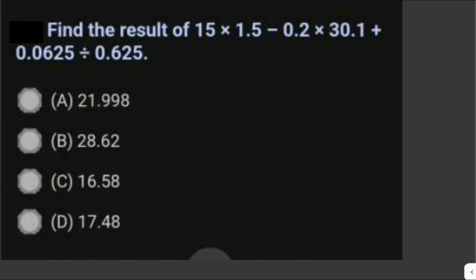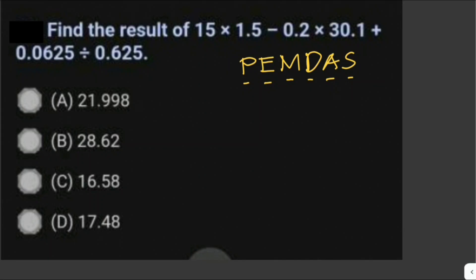Find the result of 15 times 1.5 minus 0.2 times 30.1 plus 0.0625 divided by 0.625. To solve this problem, we just have to recall the order of operations, or what we call PEMDAS. We perform operations inside parentheses first, then exponents, then multiplication and division, and finally addition and subtraction — each from left to right. In this given problem, we don't have parentheses or exponents, but we do have multiplication, division, addition, and subtraction.